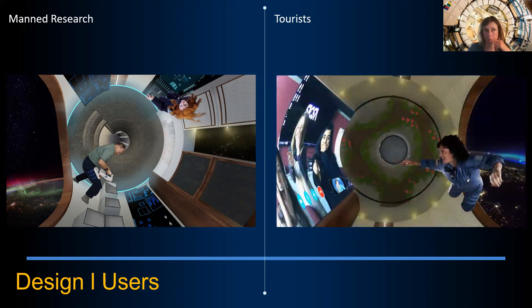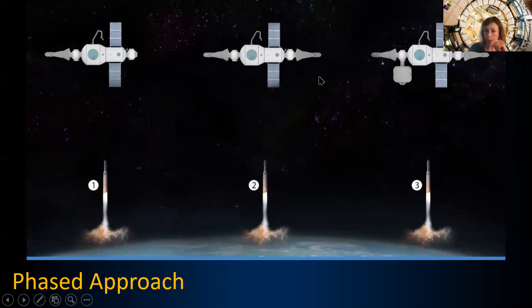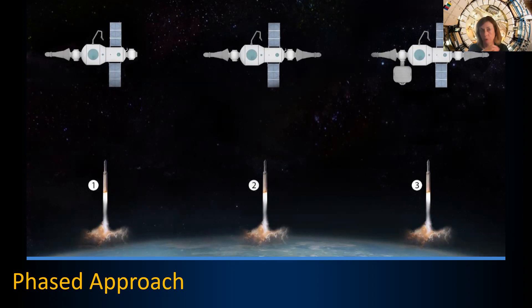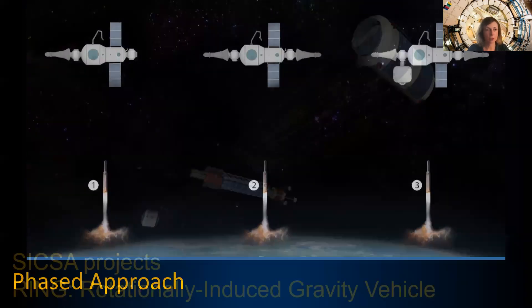We looked at three stages of development. First it would be just the Salyut station with the Almaz return capsule. Then a second return capsule could be launched and installed — allowing more people to be accommodated, since you can only have as many people as you have seats in your return vehicle. Then we suggested adding an inflatable portion similar to the BEAM module on the ISS to expand commercial activities for tourists.